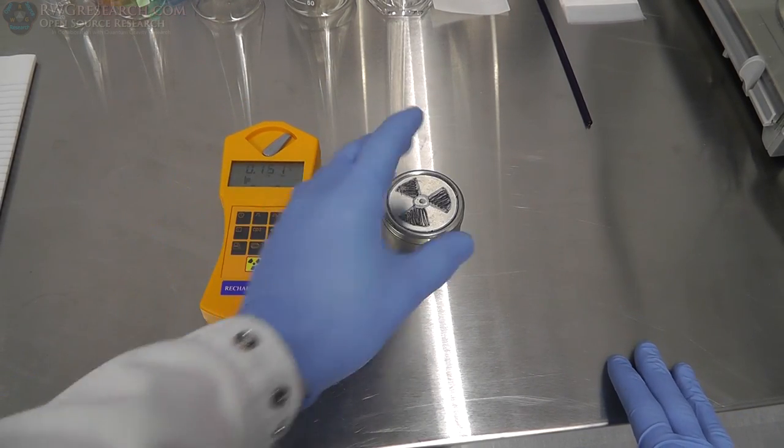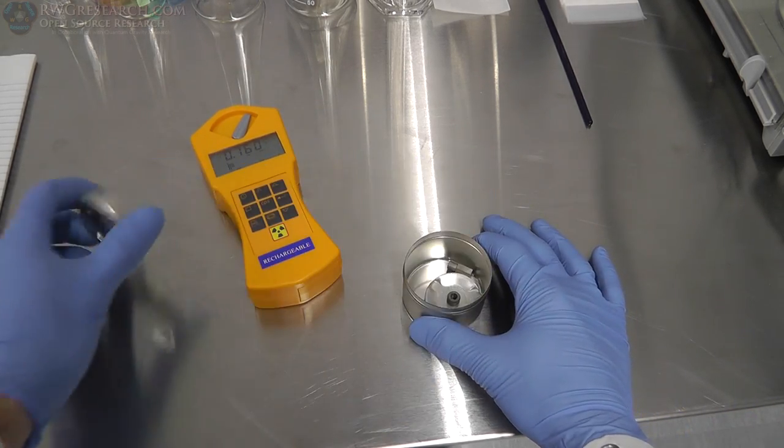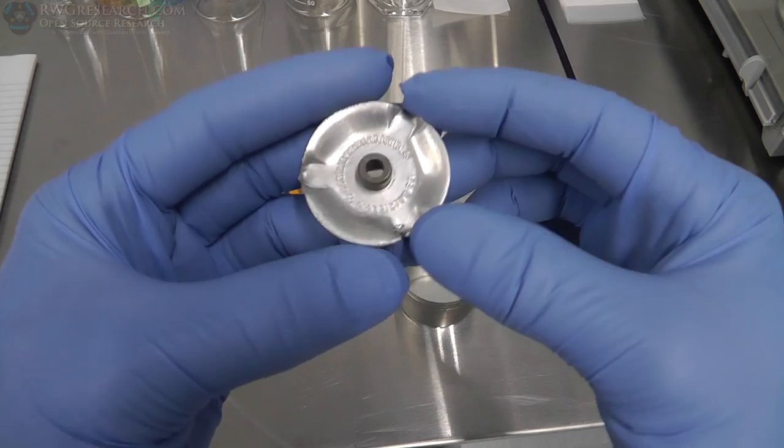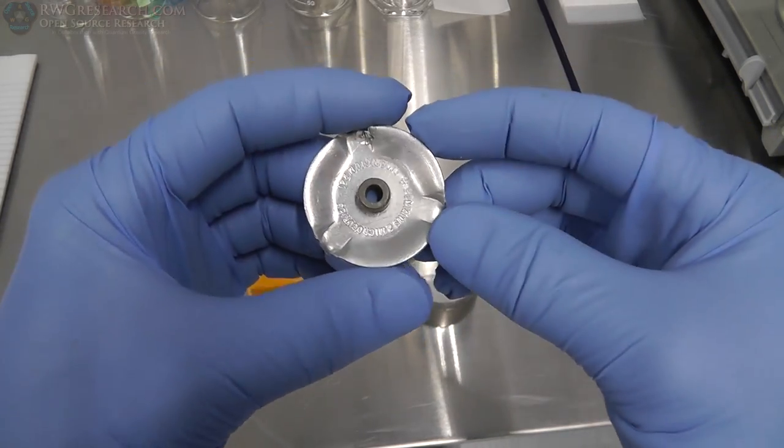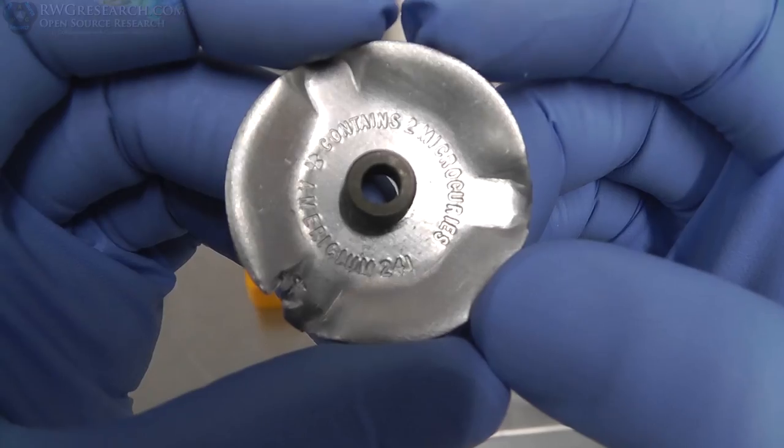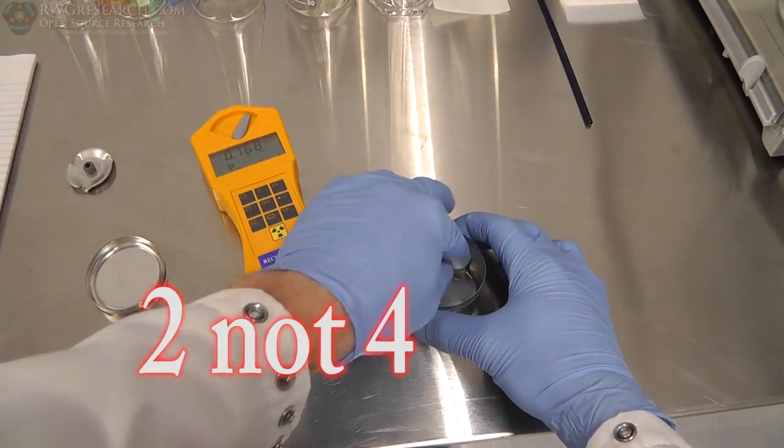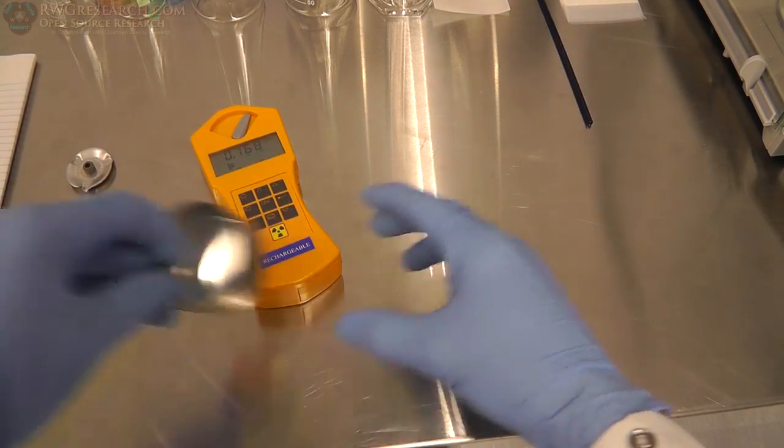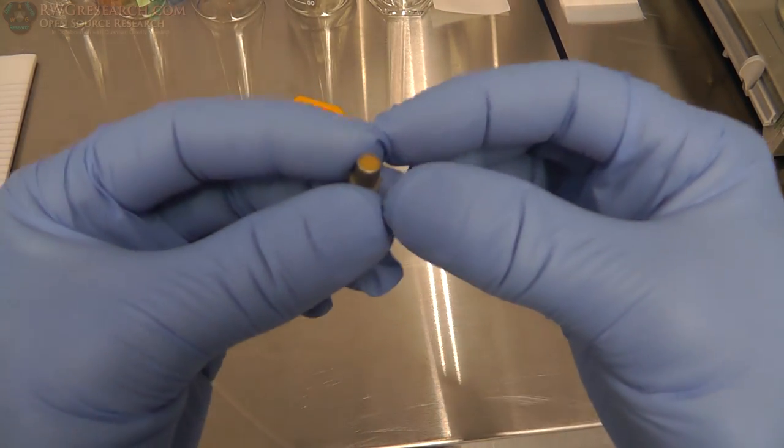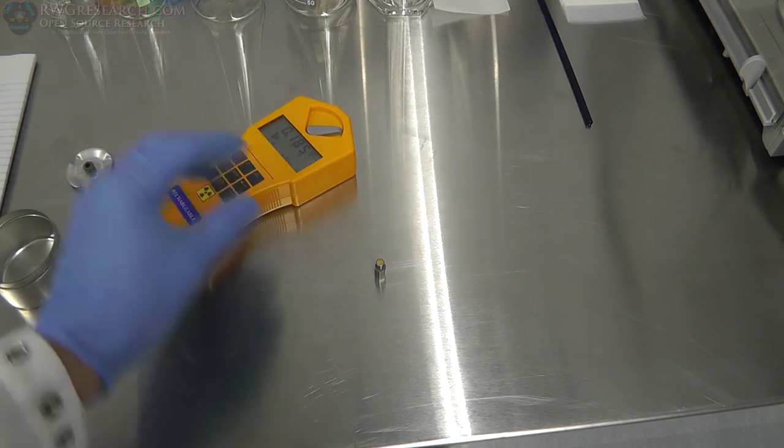So let's talk about the source that I'm going to be applying to these disks. This is basically americium out of a fire smoke detector. So this is americium-241, and this is a pretty big one, actually. It's four microcuries. This came out of a very old fire smoke detector, and it's quite strong. So this is an alpha particle emitter.